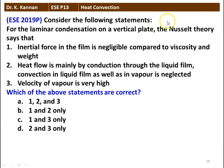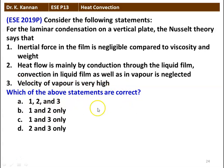Next question: consider the following statements for laminar condensation on a vertical plate. Nusselt theory says (1) inertial force in the film is negligible compared to viscosity and weight, (2) heat flow is mainly by conduction through the liquid film, (3) convection in the liquid film as well as vapour is neglected, (4) velocity of vapour is very high. Which statements are correct? The correct answer is 1 and 2. Inertia force in the film is negligible compared to viscosity and weight, and heat flow is mainly by conduction through the liquid film.